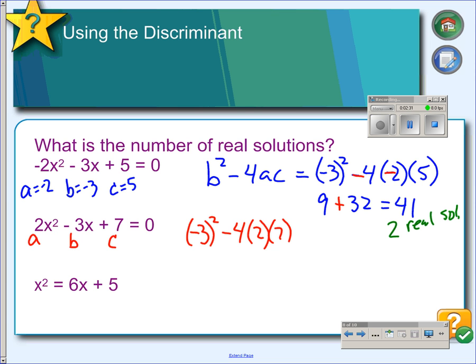So, negative 3 squared is 9, 4 times 2 is 8, 8 times 7 is 56, 9 minus 56 is negative 47. Since this came out to be a negative number, this means we will get no real solutions.